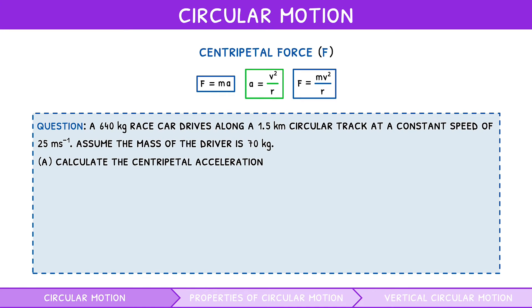For part a, we first need the track's radius, calculated from its circumference. You should remember that the circumference equals 2πr. So, substituting in the values of circumference and π, and solving for radius, we get 238.7m. The next equation to use is acceleration equals velocity squared divided by radius. So, substituting in the values of velocity and radius, and solving for acceleration, we get 2.6m per second squared.